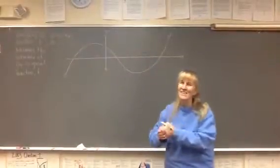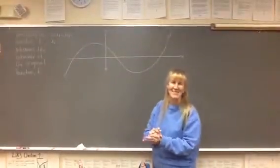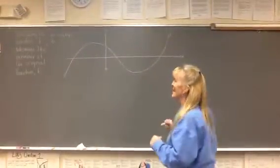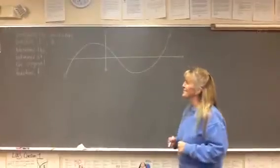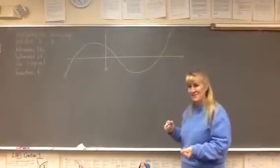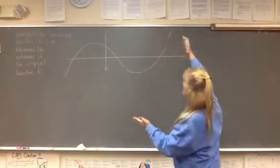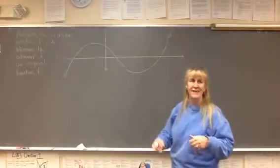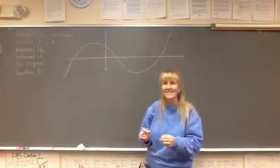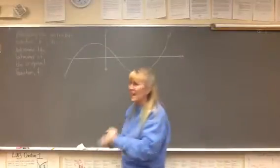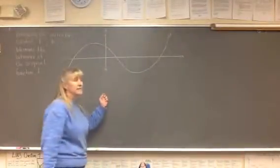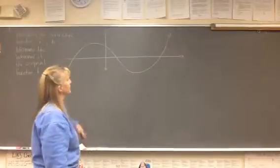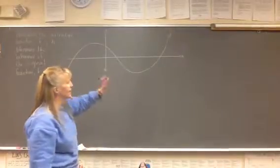Okay, here we go. We get to analyze our first derivative graph and see what's happening to the original function f. So I've drawn a nice little polynomial function that's not very busy, doesn't have a lot of things happening on it right now. This is my original function f. What can you tell me about it?